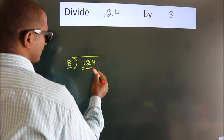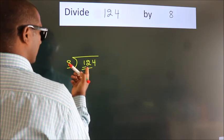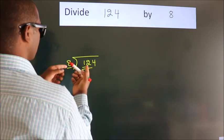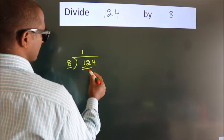So we should take two numbers: 12. A number close to 12 in the 8 table is 8 times 1, which equals 8.